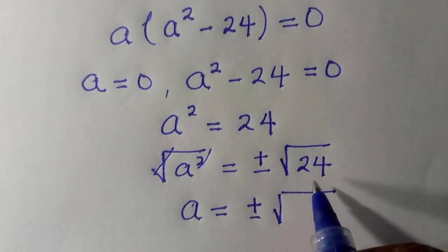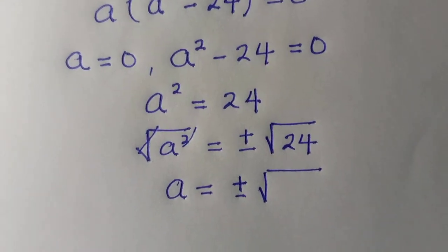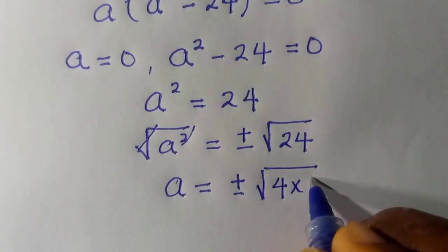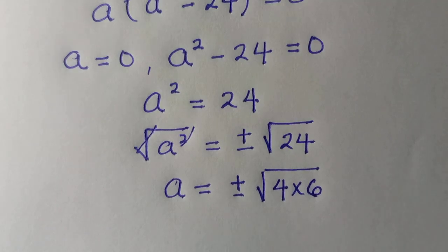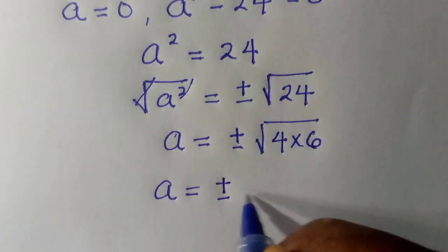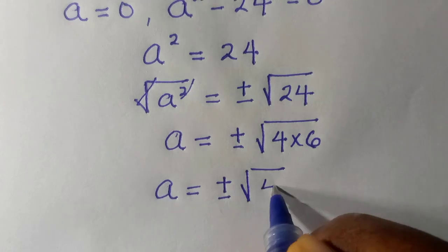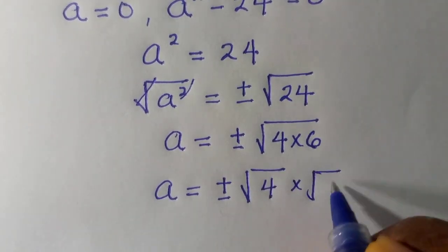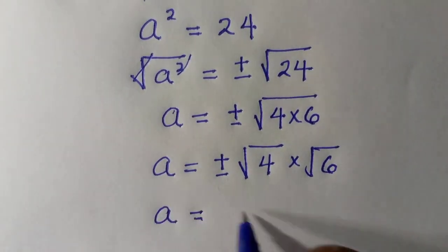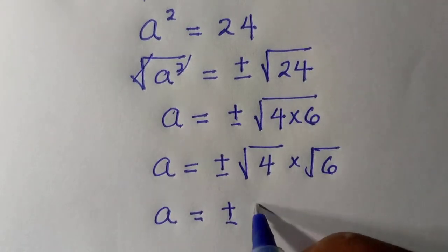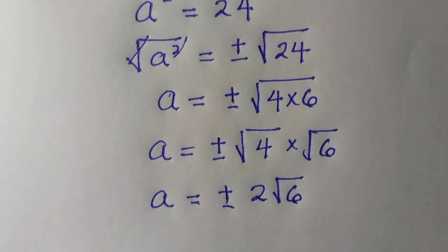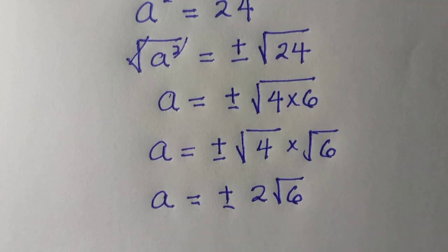We want to transform it into the simplest form. As we have 24, we can have it as 4 multiplied by 6. So by separating this, we have a equals plus or minus the root of 4 multiplied by the root of 6. The root of 4 gives us 2, then root 6. So we get plus or minus 2 root 6 for the value of a.